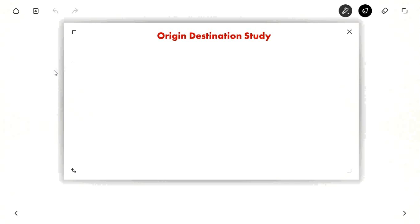Origin destination study. Suppose this is your home, A point. And this is your office, B point. So you go from home to office. So your origin is A. And B is your destination.